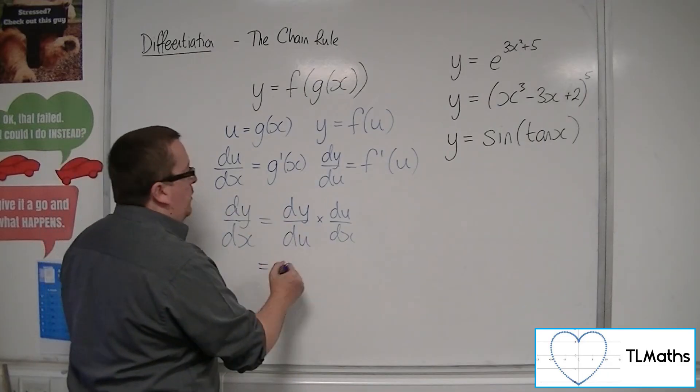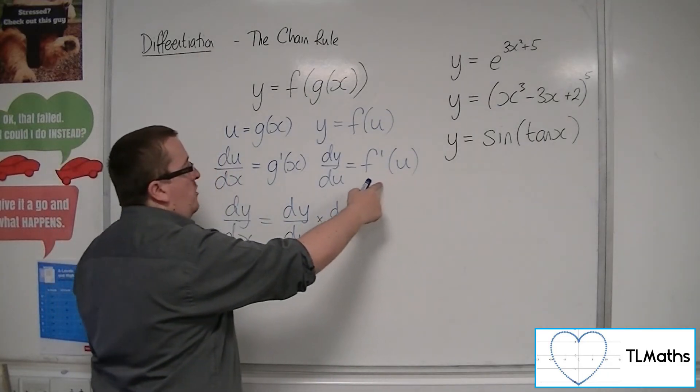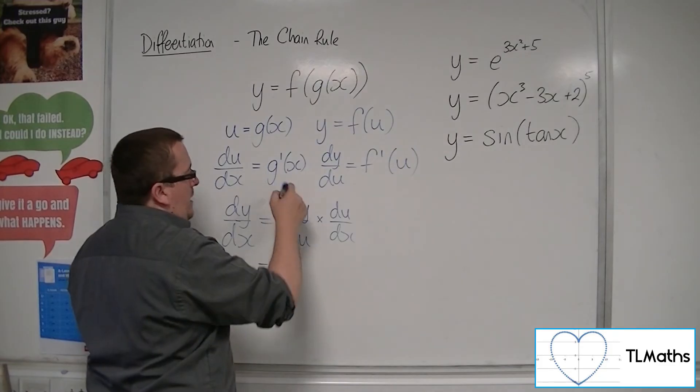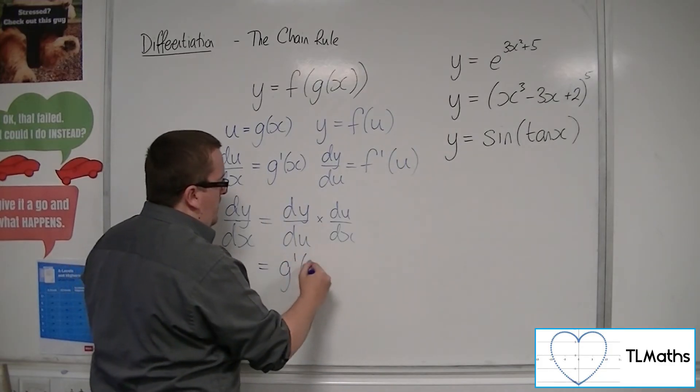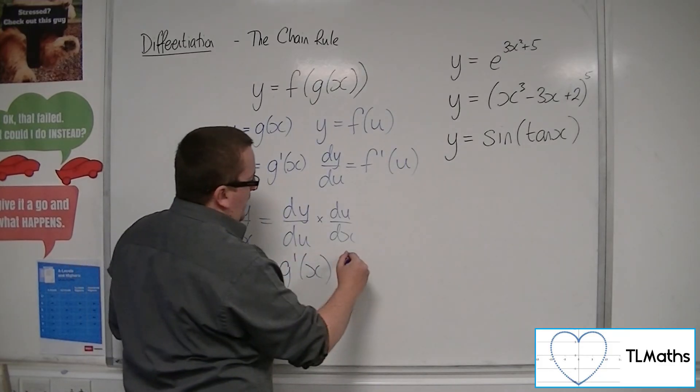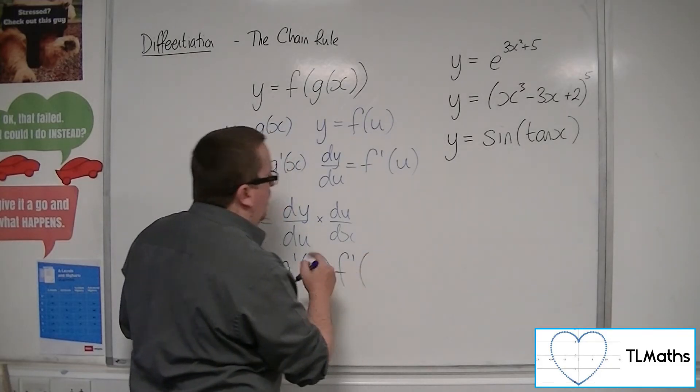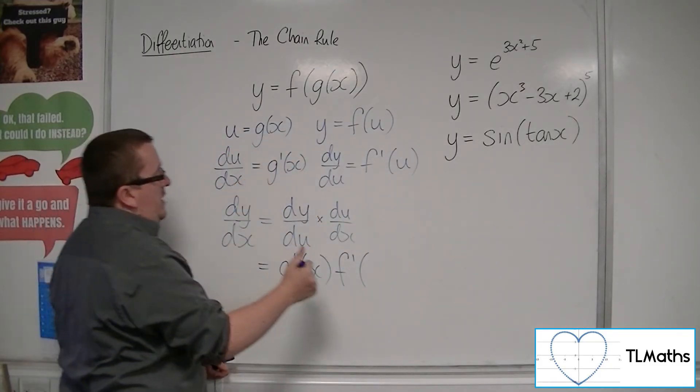So as a product, we have dy by du, the f prime u, and g prime x. I'm going to put the g prime of x at the front, and I'm going to have f prime of u.